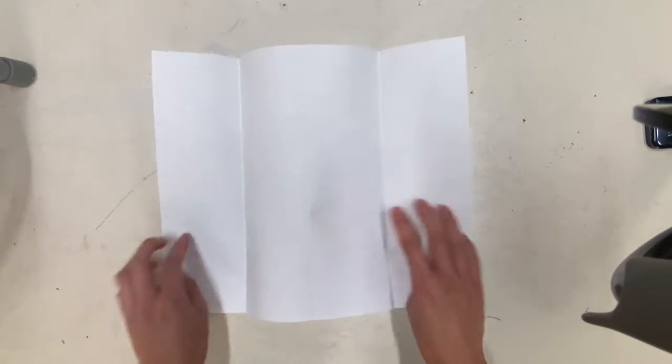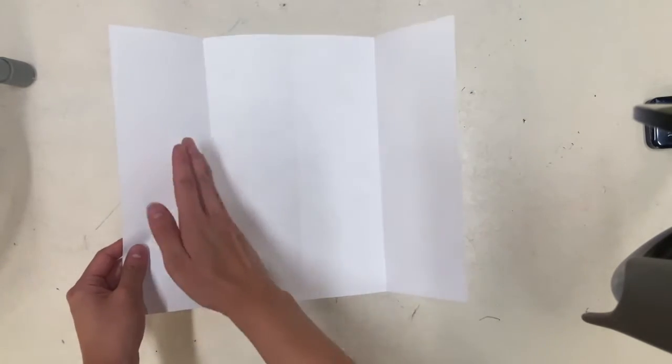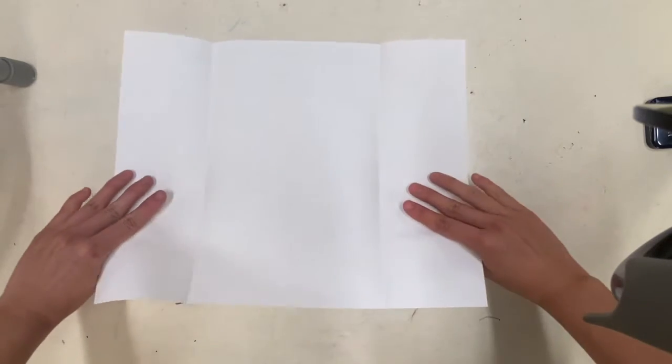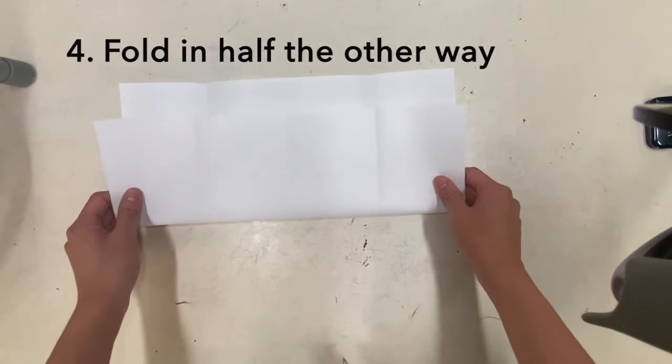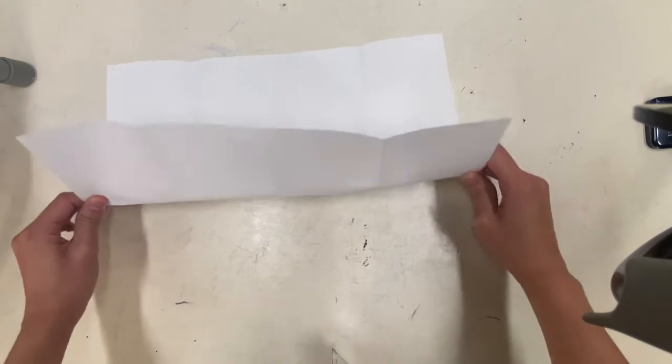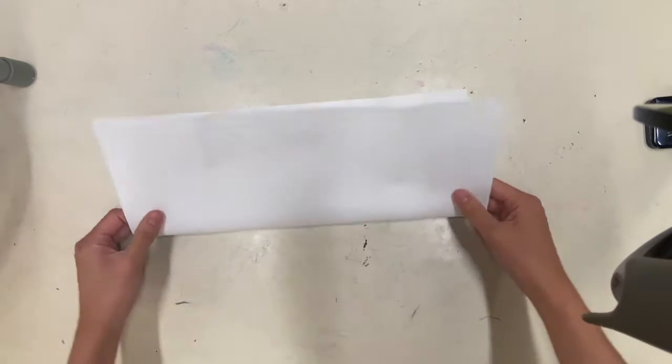I'm going to open it up and now I have four skinny rectangles going up and down. I'm going to do a hot dog fold because we want eight sections, so a fold in half, a hot dog fold, nice and skinny.